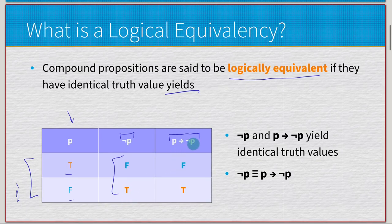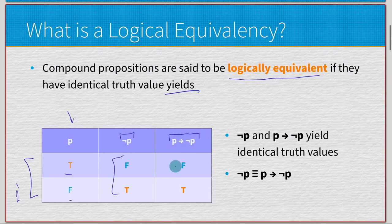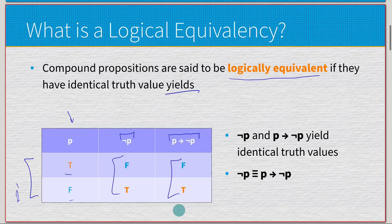Now, if p implies negated p — we're going to have true implies false, which is going to be false. And then we have false implies true, which is going to be true. That gives us false, true. So both of these are false, true. Therefore, negated p is logically equivalent — indicated by the triple equals line — to p implies negated p.